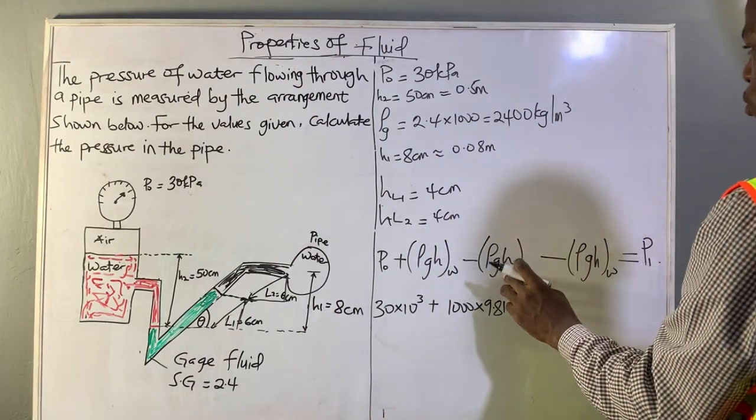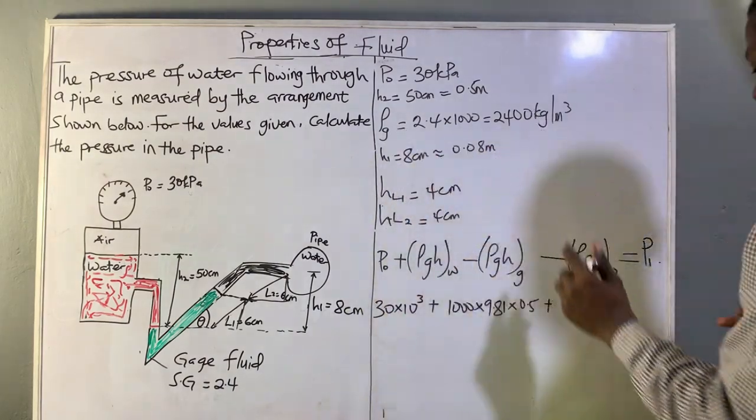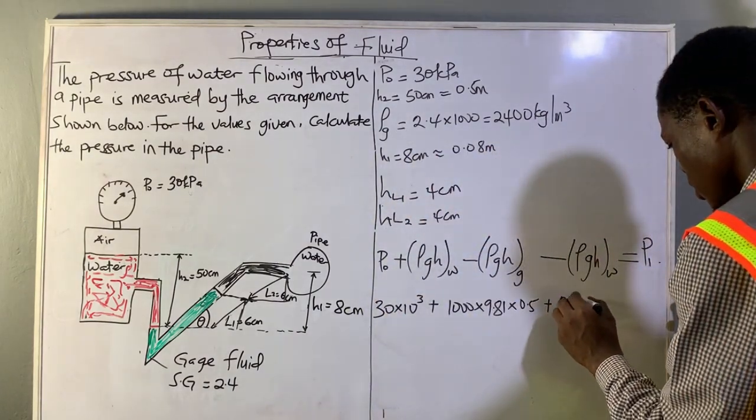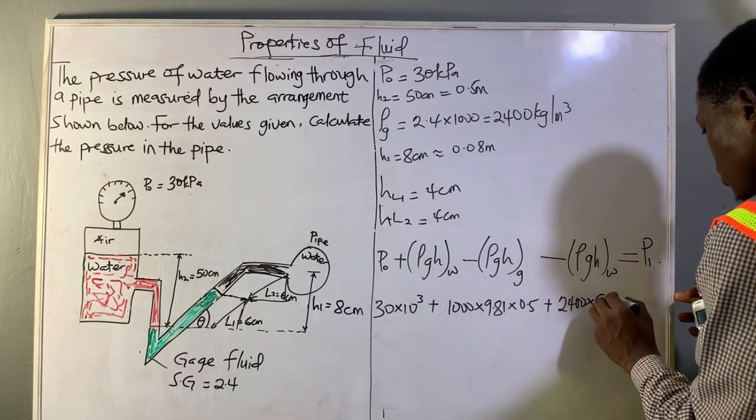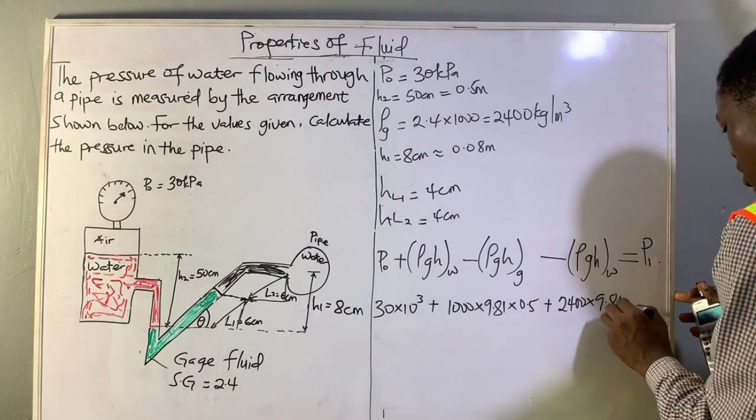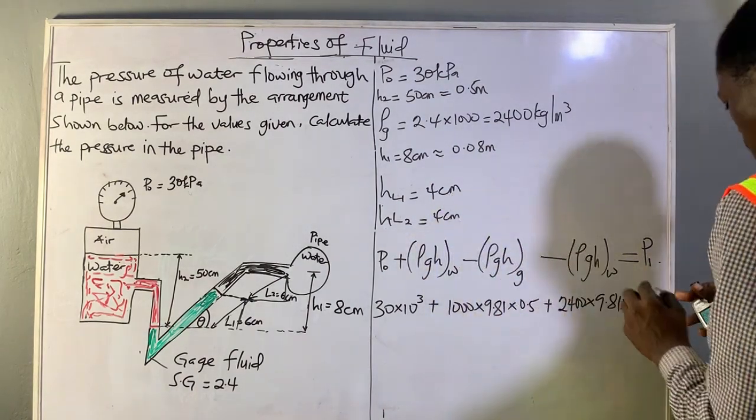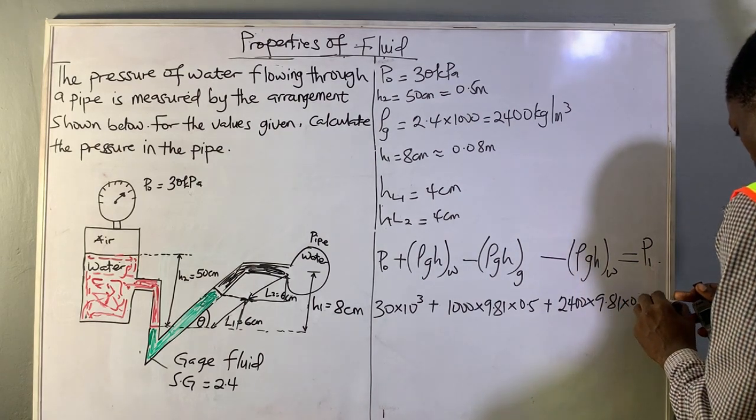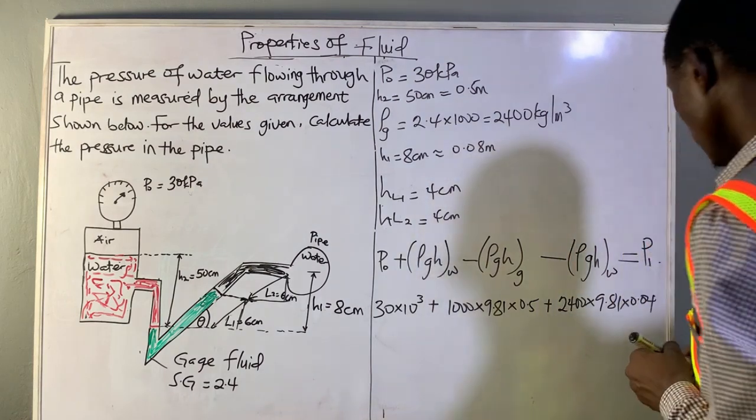Plus the density of the gauge fluid, which we found to be 2400, times 9.81, times the height, which is 0.04 meters.